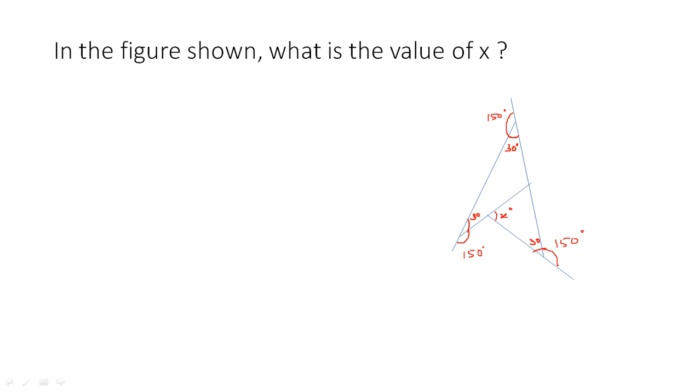And if we see this bigger triangle, the two angles are 30 each. So we can say the third angle would be 180 minus 60, that is 120. So this angle would be 60 degrees.